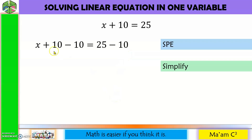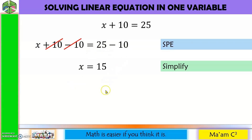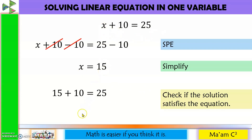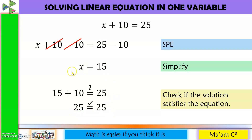We simplify: positive 10 and negative 10 cancel out, leaving us with x. And 25 minus 10 equals 15. Now we check: substituting 15 into the original equation, 15 plus 10 equals 25. They are equal, so our answer x equals 15 is correct.